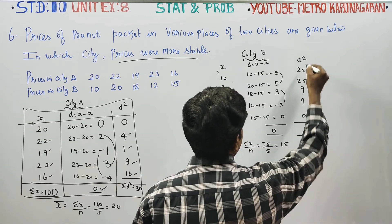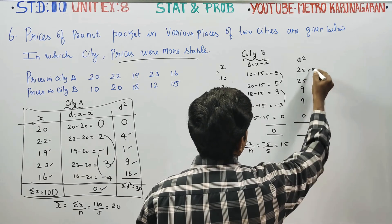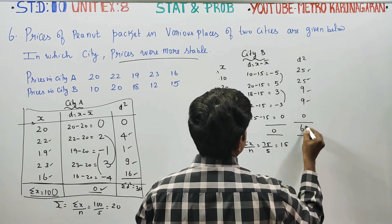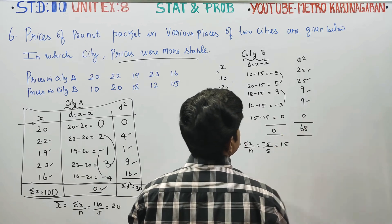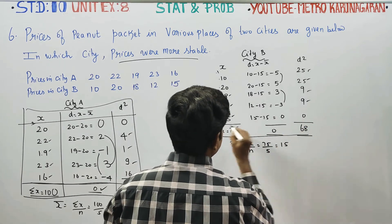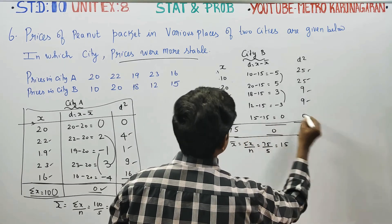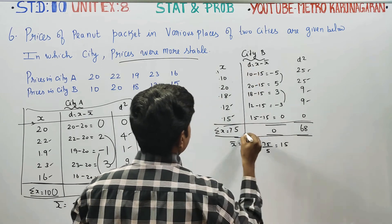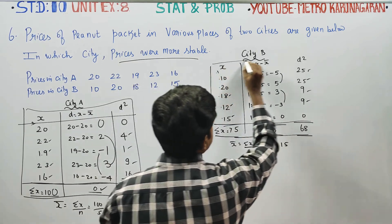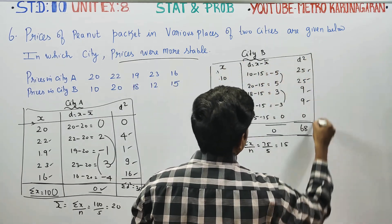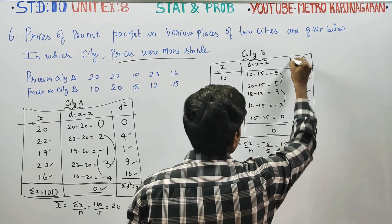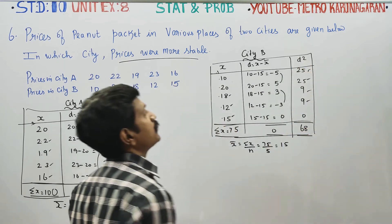Now find d squared for City B: 25, 25, 9, 9, and 0. Adding these gives sigma d squared equals 68. Draw the table neatly using scale and pencil — it will look very neat. Finish this table completely.